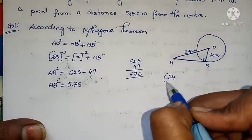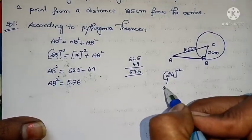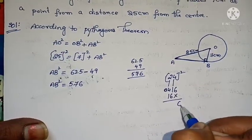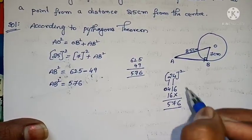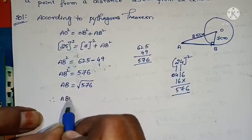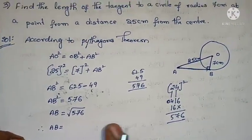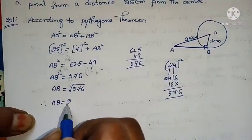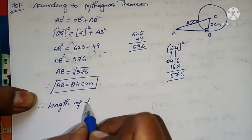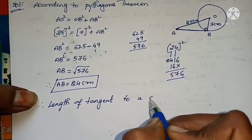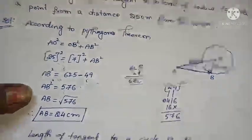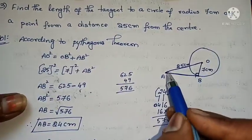AB squared equals 576, and 576 equals 24 squared. Therefore AB equals root 576, so AB equals 24 centimeters. The length of tangent to the circle is 24 centimeters. There is an external point, the distance from center is 25 cm, and the radius is 7 cm. By Pythagoras theorem, AO squared equals AB squared plus OB squared, giving the answer.